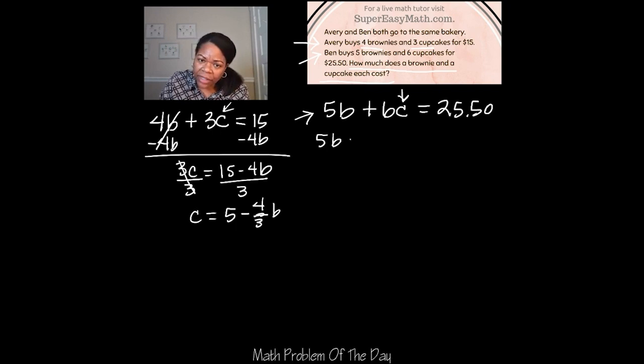So that means I have 5B plus 6. I'm going to put parentheses to make it clear. I have 5 minus 4/3B equals 25.5, and then I can just drop the zero. I don't have to keep it. It's got the same value with it or without it.